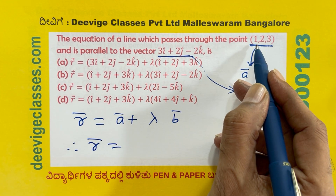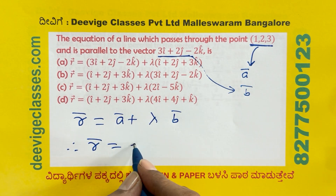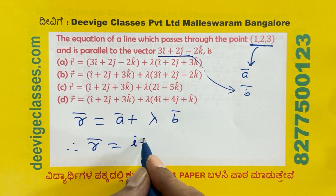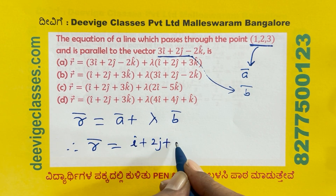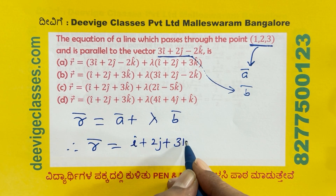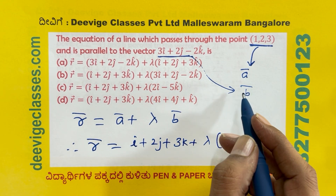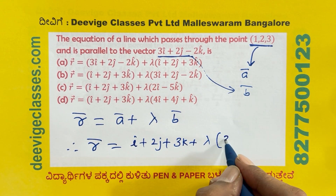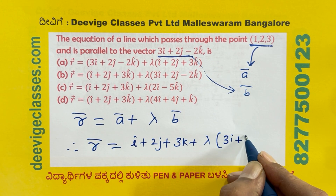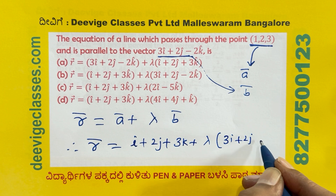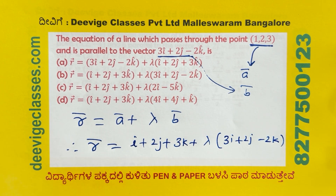The position vector of the point is 1i-cap plus 2j-cap plus 3k-cap. The vector equation is: R = (i-cap plus 2j-cap plus 3k-cap) plus lambda (3i-cap plus 2j-cap minus 2k-cap).